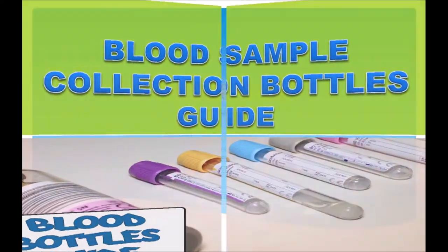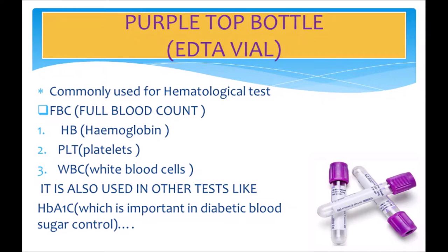The first is the purple top bottle, which we call the EDTA vial. EDTA stands for Ethylene Diamine Tetra Acetic Acid, which is an anticoagulant present in this vial to prevent the blood from clotting. We basically use this purple vial for hematological tests, including the full blood count, hemoglobin test, platelet count, and white blood cell tests.